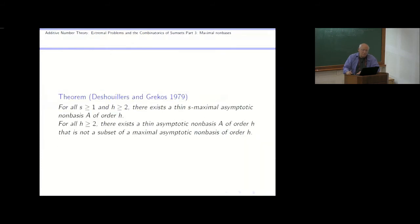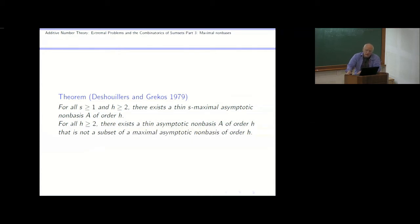Most theorems, as I said yesterday, we can prove for bases of order 2 but not for bases of higher order. But there's a very beautiful theorem of Jean-Marc and Georges Grecos that deals with these s-maximal asymptotic non-bases of any order. For every s greater than or equal to 1 and every order h, they construct a thin s-maximal asymptotic non-basis of order h, and they also construct a thin asymptotic non-basis of order h which is not contained in a maximal asymptotic non-basis of order h.